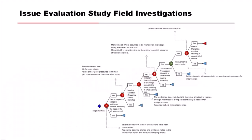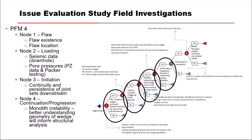Getting into the drilling investigation - what nodes in the event tree does drilling impact? It really affects a lot of the nodes. Node 1, the flaw, similar to mapping. It informs loading - seismic data and pore pressure data from the piezometers and packer testing. Initiation - the continuity of that joint set or those shear planes. And then monolith instability - understanding the geometry of the wedge informed the structural analysis.